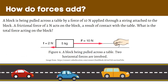As shown in Figure 5, a smaller mass object experiences a greater acceleration than a larger object when an identical force is applied. For example, we have a block being pulled across a table by a force of 10 N applied through a string attached to the block, and a frictional force of 2 N acts on the block as a result of contact with the table. Two horizontal forces are involved, and since force is a vector quantity, we must add these forces as vectors, taking into account their direction.